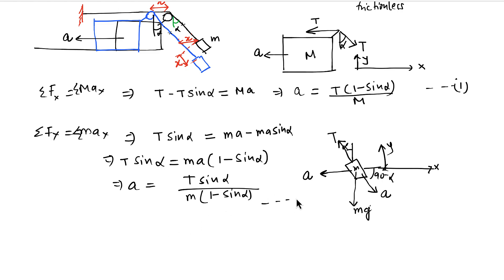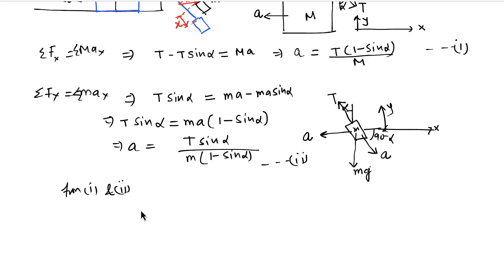So if we take this equation 2, then from 1 and 2, we can equate A, which will give me (1 minus sine alpha) by M equal to sine alpha by m(1 minus sine alpha).